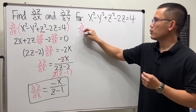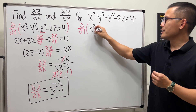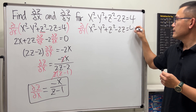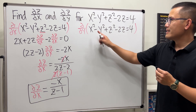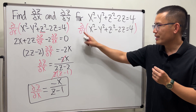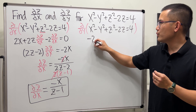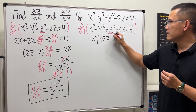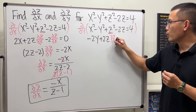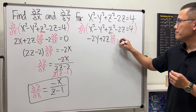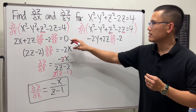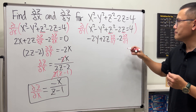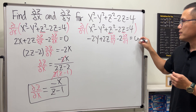Now let's do the partial with respect to y. We are in the y world, so x squared gives 0. Here we get negative 2y. Here we get plus 2z times partial z with respect to y. Then minus 2 times partial z with respect to y. And the derivative of 4 is equal to 0.